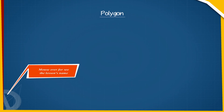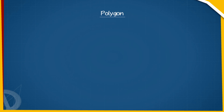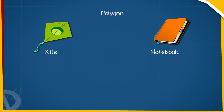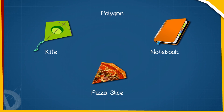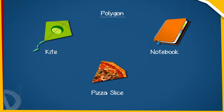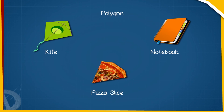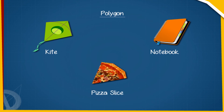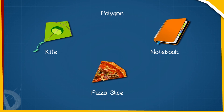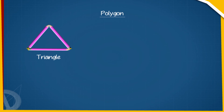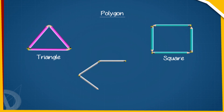Polygon. Consider a few objects: a guide, a notebook, and a pizza slice. These objects are closed curves or figures made up of only line segments. A polygon is a closed shape formed with line segments. We can take some pencils and arrange them in different orders to make different polygons.